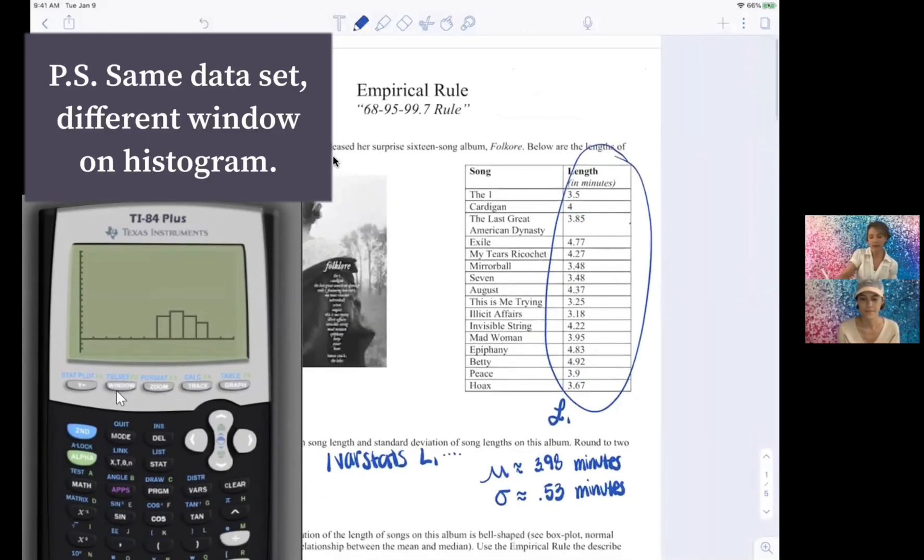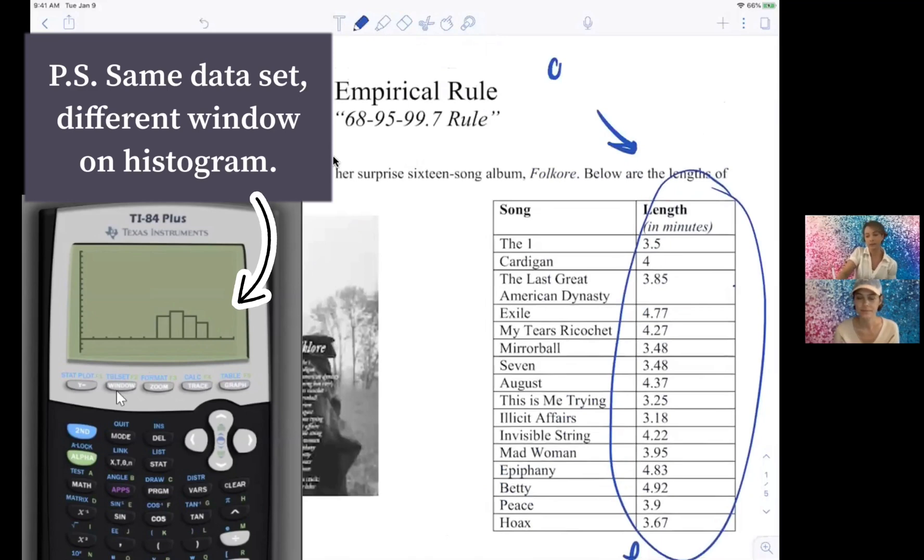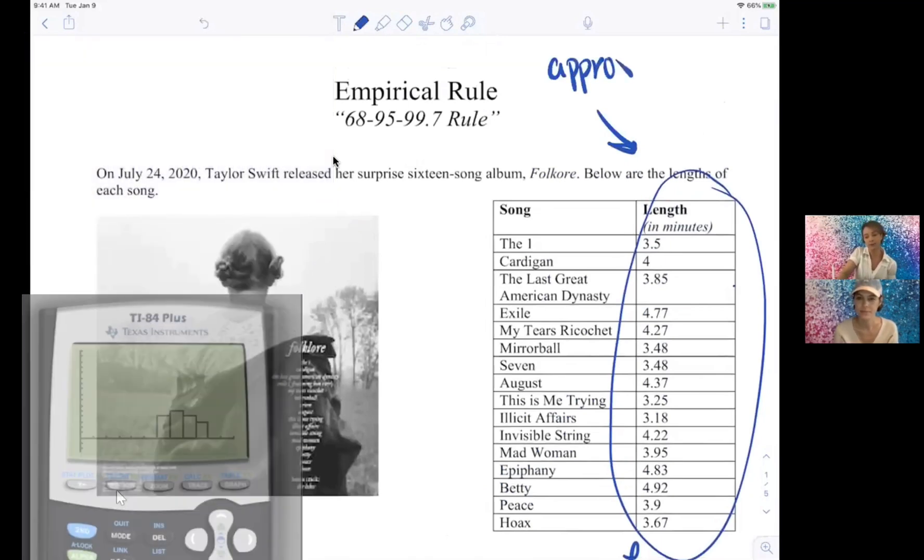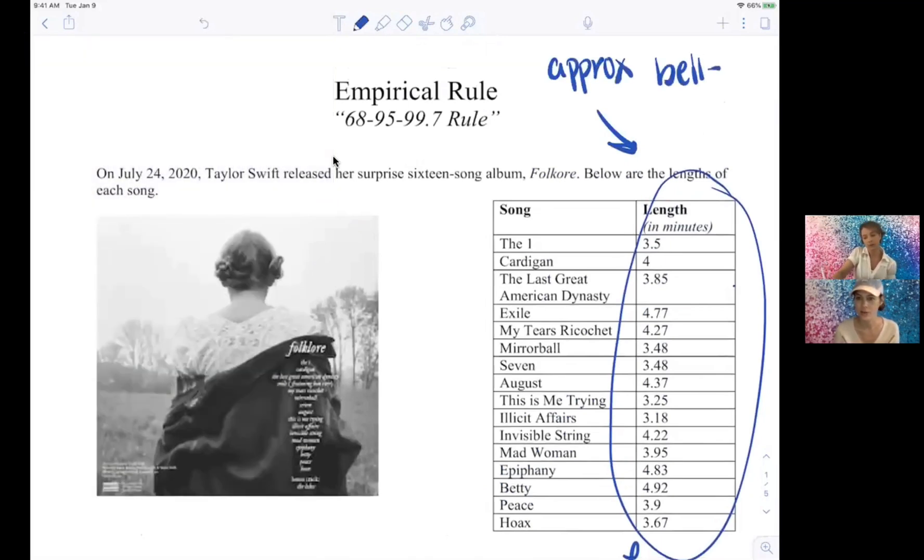Okay, and another word for that is normal. Yes, all normal curves are bell-shaped. I'd be a little careful because not all bell-shaped curves are normal. We'll talk about the t-distribution later, but we kind of casually use those words synonymously.